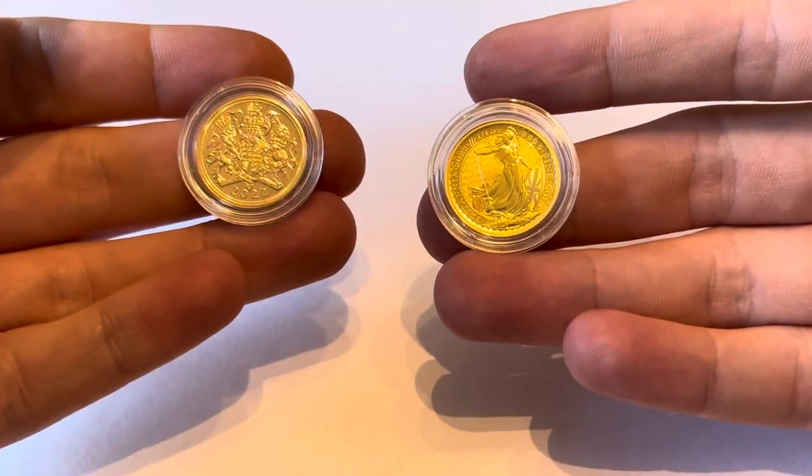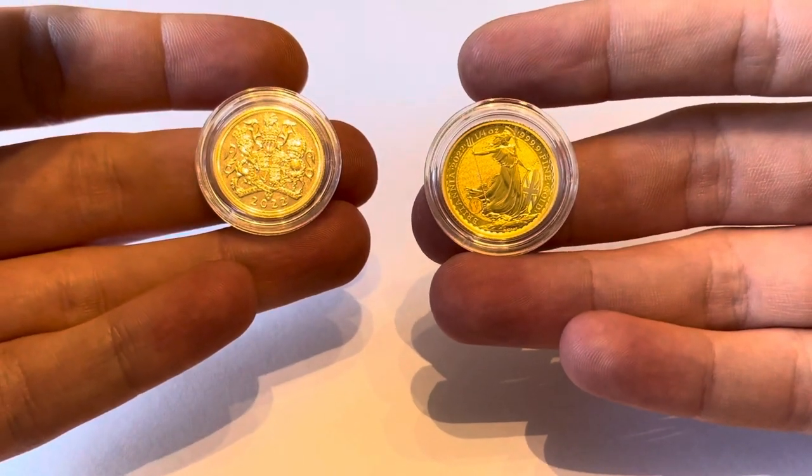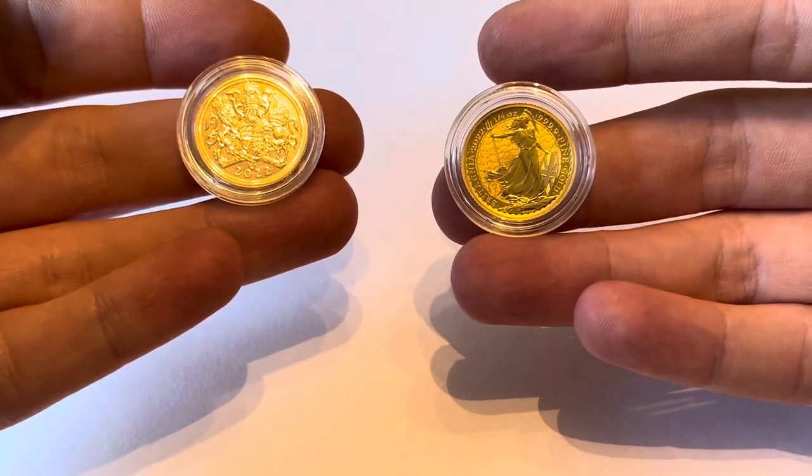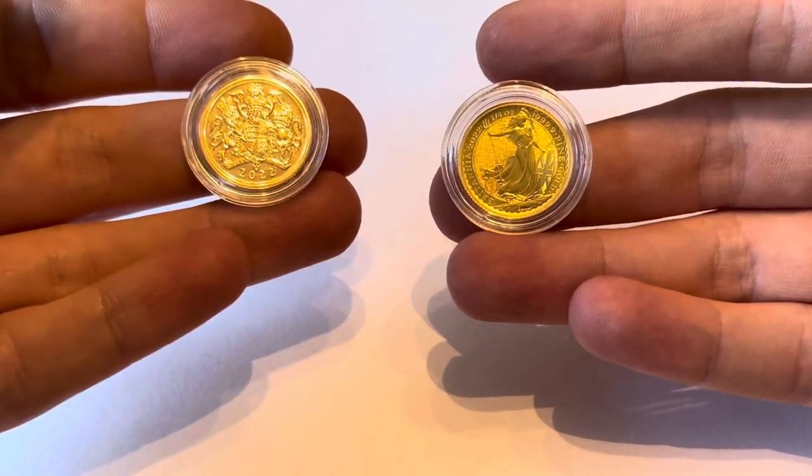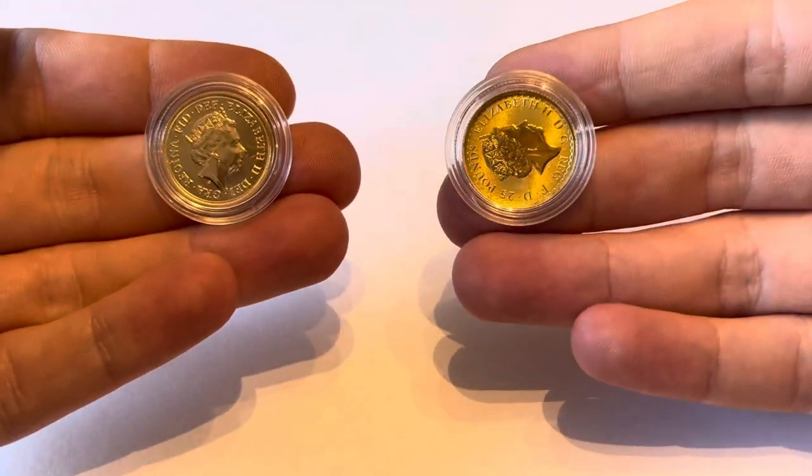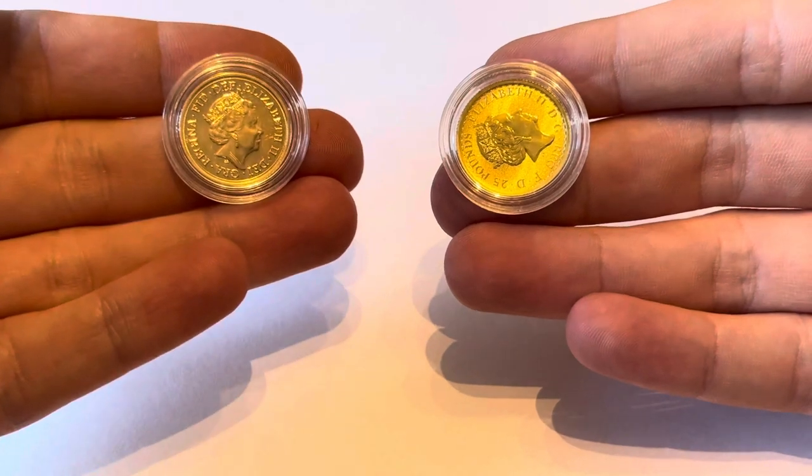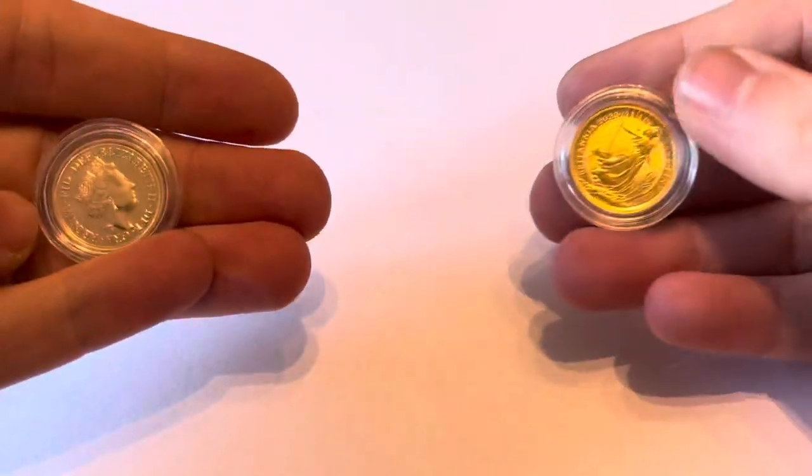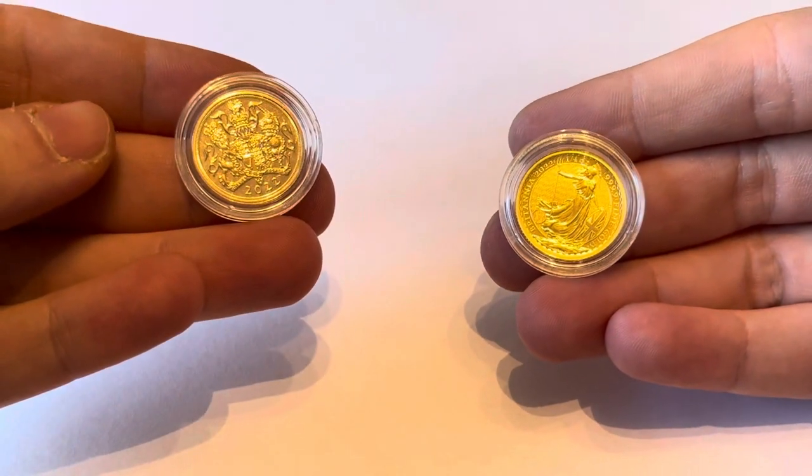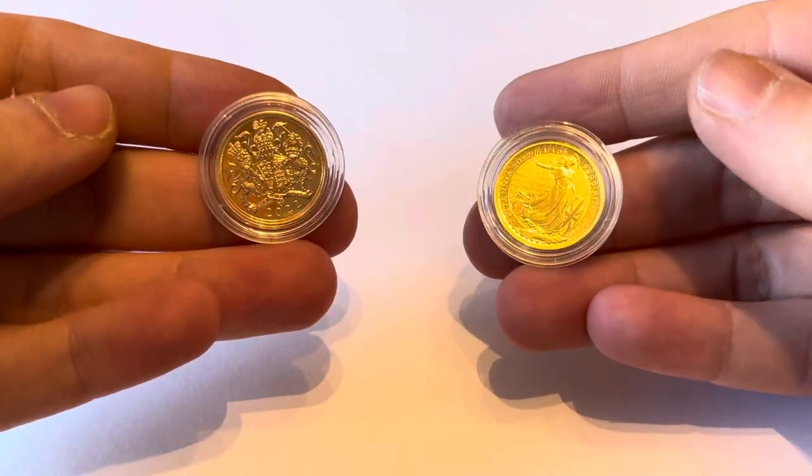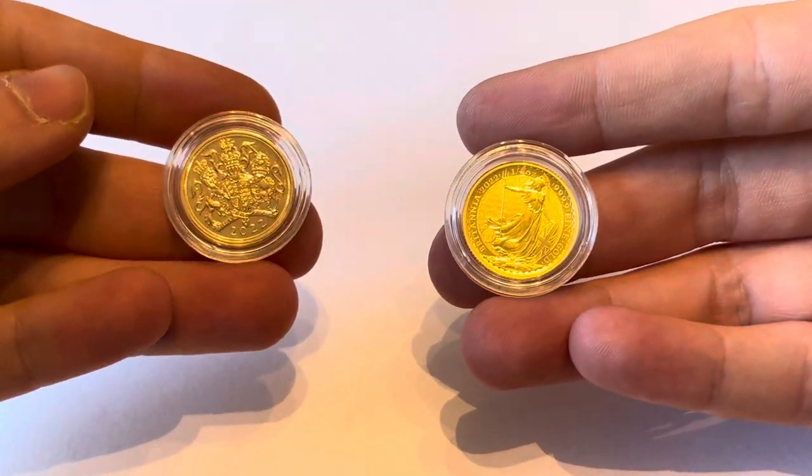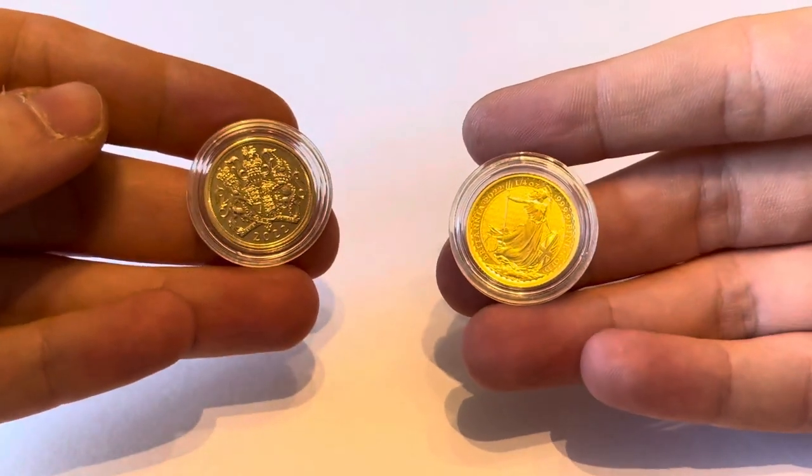It depends on personal preference really. The sovereign is a lot older. I think its first production was in the early 1800s. So they've been around the gold community for literally hundreds of years. The Britannia is a bit more new on the scene. I think the first production line of these from the Royal Mint was in the late 80s. So not quite as much heritage and history on the Britannias, but by no means are they an unknown quantity.